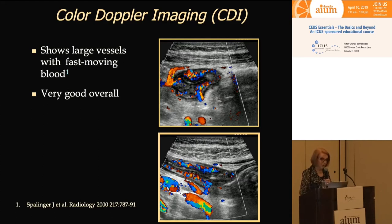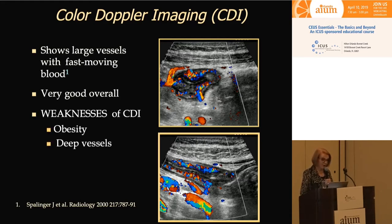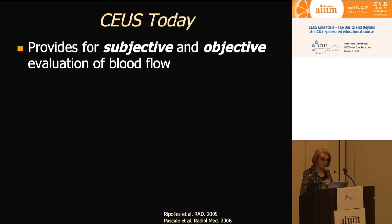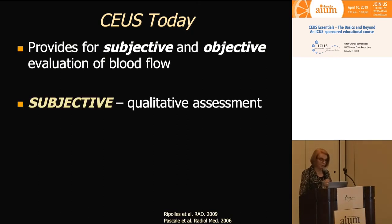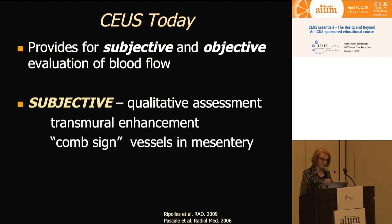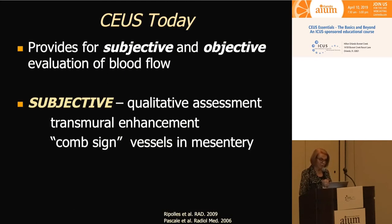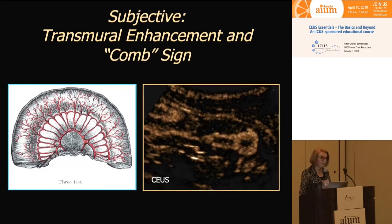With color Doppler on the picture, we can see beautifully the vascularization of the bowel wall. The problem with using Doppler alone is that if patients are very large or the bowel is very deep, we can't see blood flow well. Most importantly, we cannot ever see blood flow at the perfusion level. CEUS allows us to do subjective and objective evaluation of blood flow in the bowel wall. Subjective evaluation gives a qualitative assessment showing transmural enhancement or a comb sign in the mesentery and vessels.